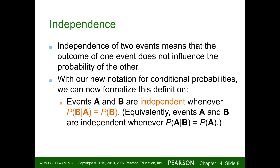Independence for two events means the outcome from one event does not influence the probability of the other. With our new conditional probability notation, we can formalize this: events A and B are independent whenever the probability of B given A equals the probability of B. Equivalently, the probability of A given B equals the probability of A, because one doesn't influence the other.